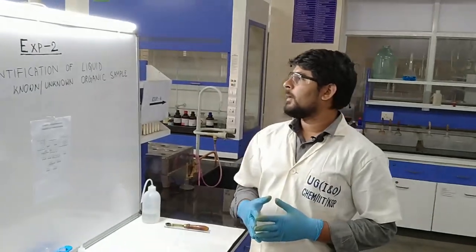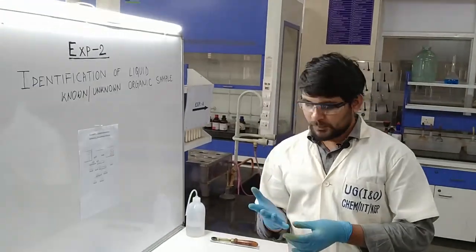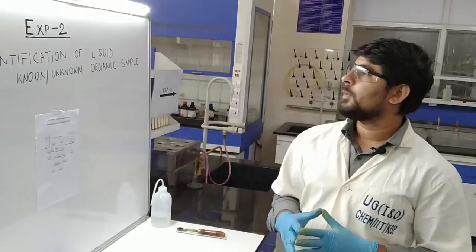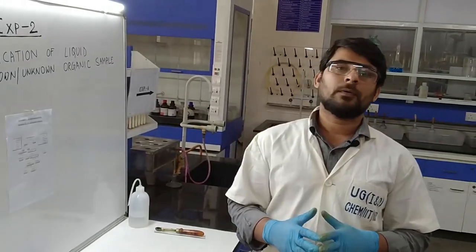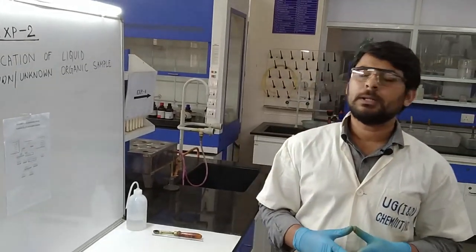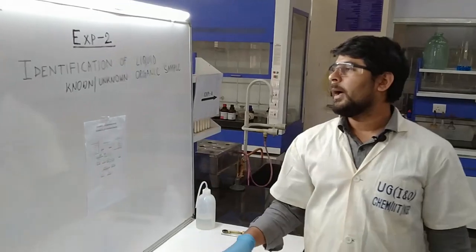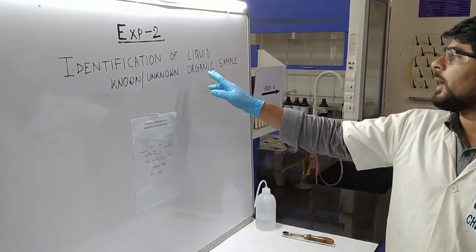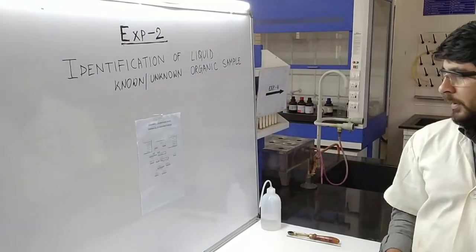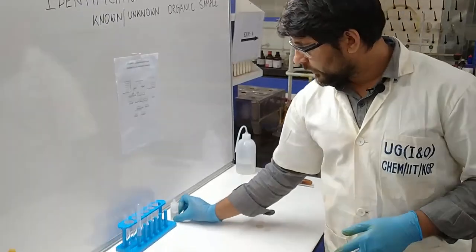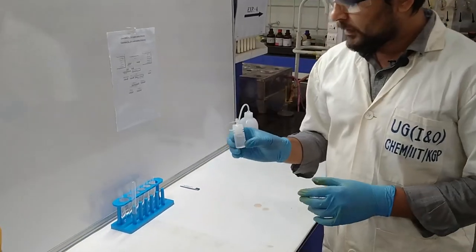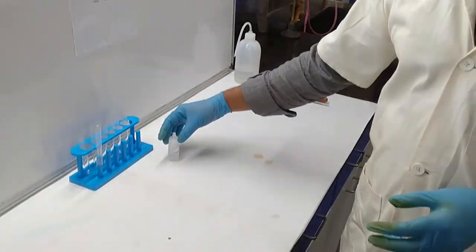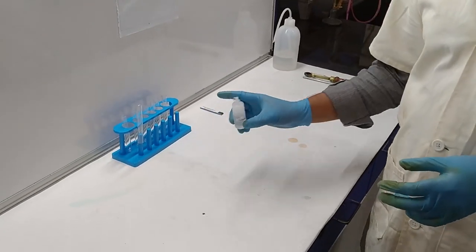Hello students. Now I am going to show you another experiment of organic laboratory — experiment number 2 — which is the identification of a liquid known or unknown organic sample. So, today I am going to perform this experiment using an ethanol sample.